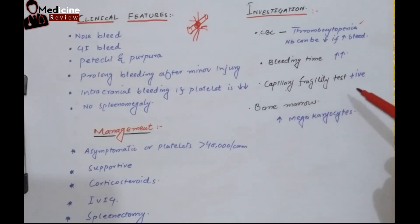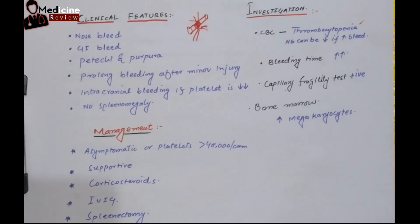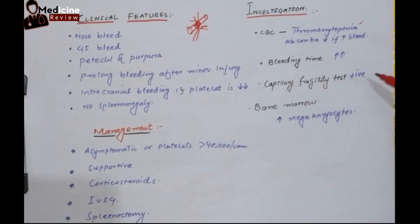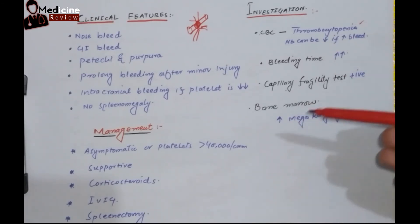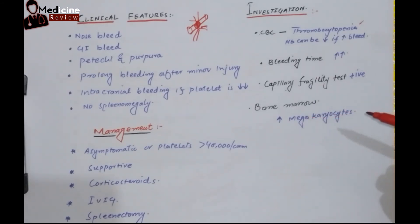Another important test is the capillary fragility test, done using a tourniquet. We tie a tourniquet around the arm and keep it for about 5 minutes. After removal, on the distal side of the tourniquet, there will be petechial or purpuric rashes — this is a positive capillary fragility test, seen in bleeding disorders. Additionally, on bone marrow examination, since there is increased destruction of platelets, there will be increased production of megakaryocytes — the precursor cells for platelets — visible in the bone marrow.